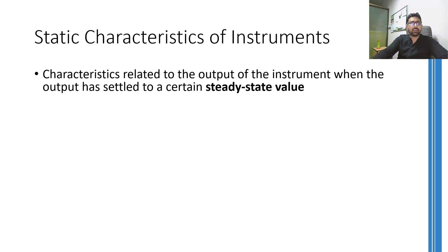It got this name from the fact that in this period, the output is dynamic — it is changing. Similarly, once the output has settled to a final output and has become static, the characteristics at this point are called static characteristics.